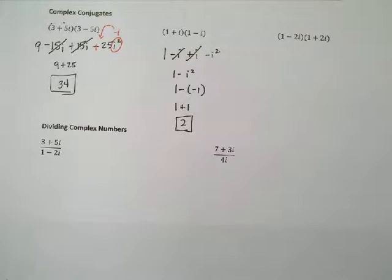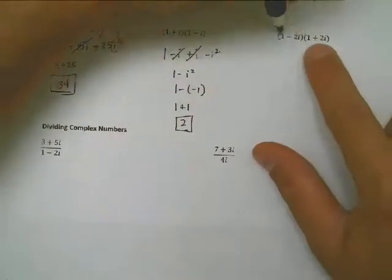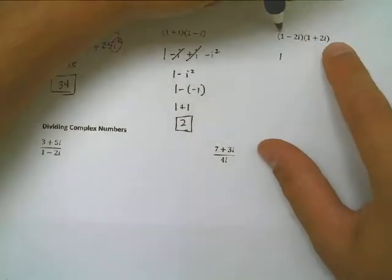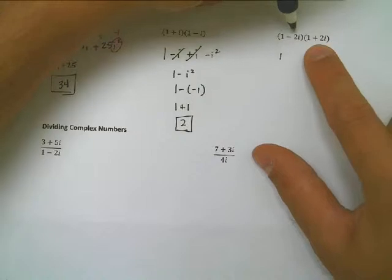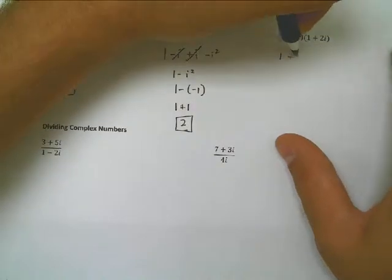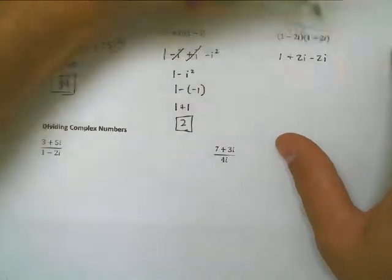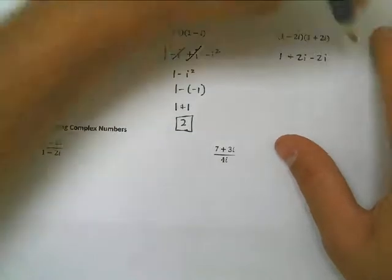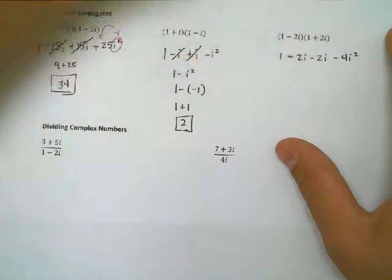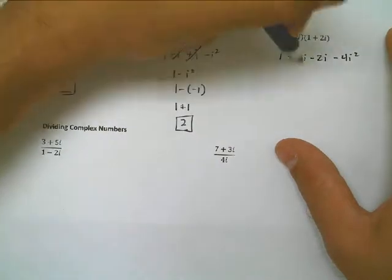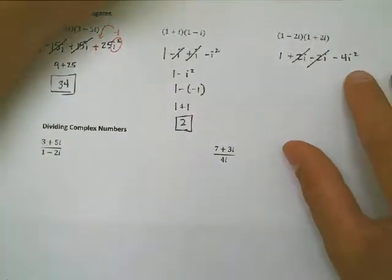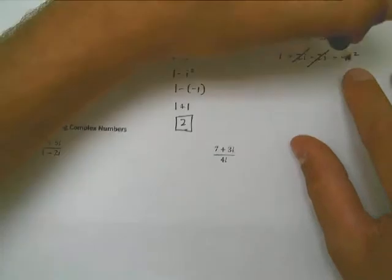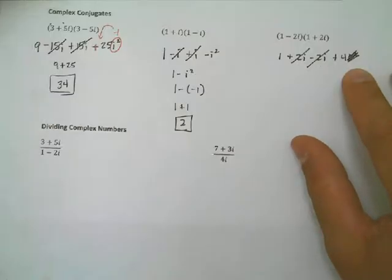One more example. 1 minus 2i, 1 plus 2i. FOIL it out. 1 times 1 is 1. Plus 2i. Minus 2i. Last terms, minus 4i squared. The middle two terms go away. The i squared just flips the sign of the 4. And I end up with 1 plus 4. That ends up being 5.